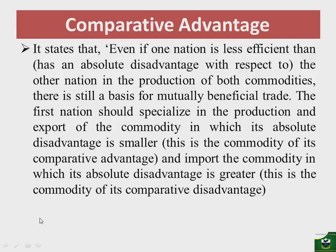What needs to be done is that the first nation — in this case nation A — should specialize in the production and export of the commodity in which its absolute disadvantage is smaller compared to the other nation, and then import the commodity in which its absolute disadvantage is greater.